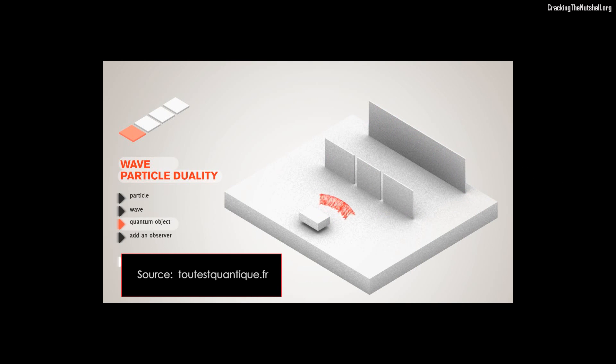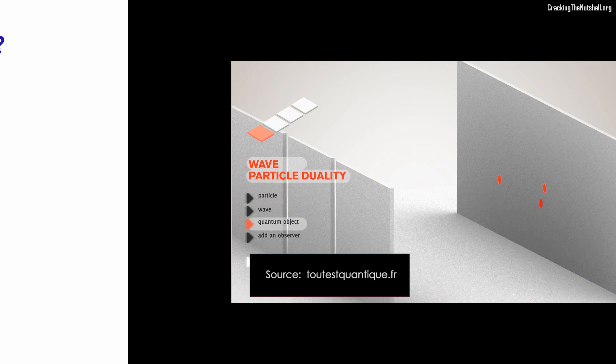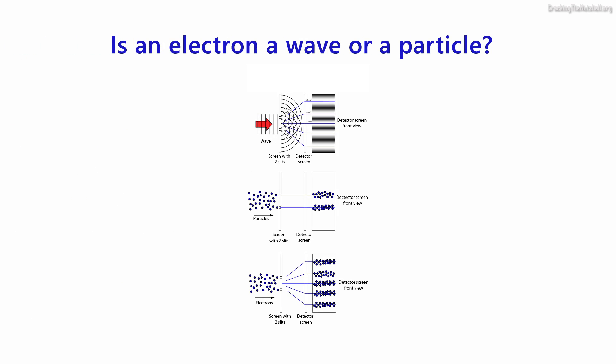We know that both light and matter exhibit what is known as wave-particle duality. Under different circumstances, both light and matter can display either type of behaviour, wave-like or particle-like, depending on how we set up our experiment, the types of questions we decide to ask nature, and whether or not we make an observation. Let's take an electron, for instance.